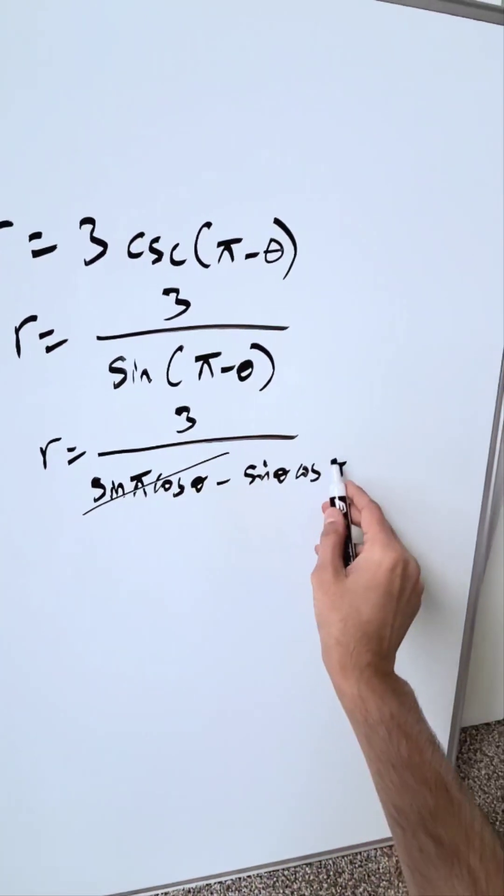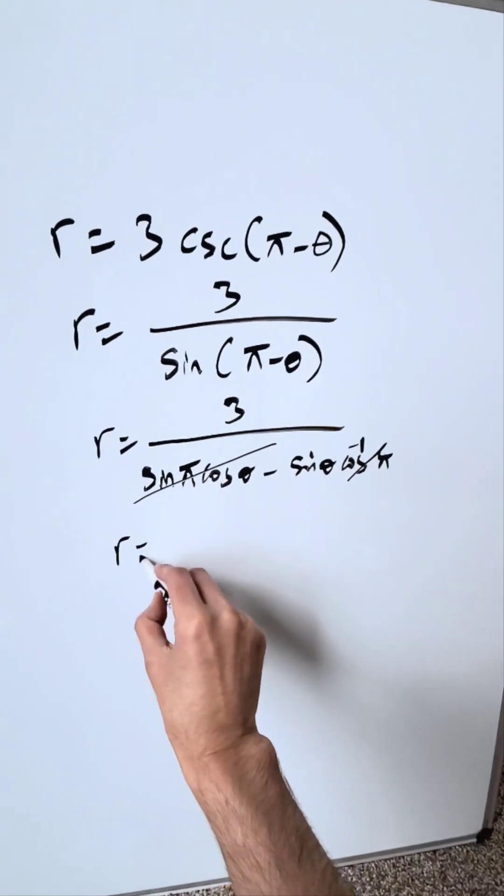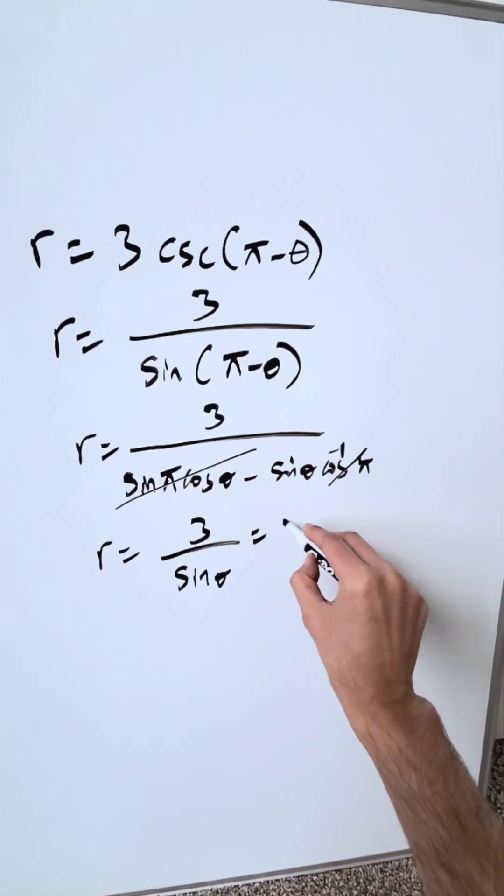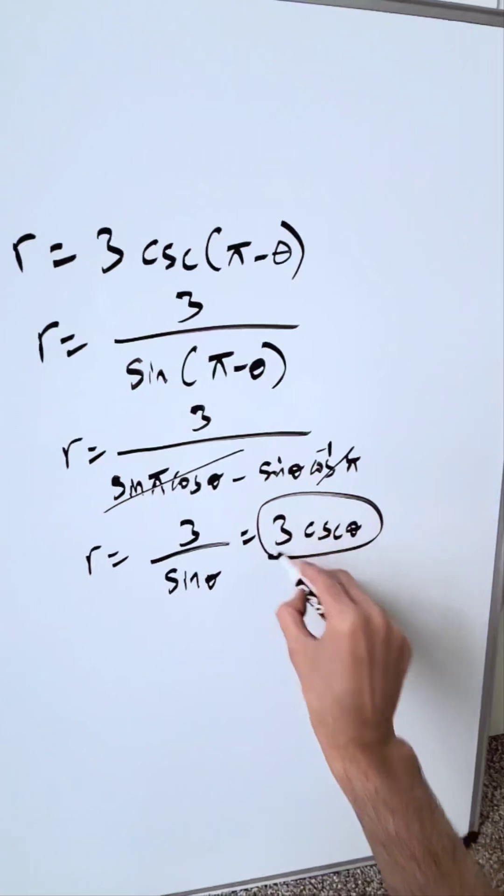zero, this goes away. Cosine pi is minus one; it will convert this into a positive. We have r equals 3 divided by positive sine theta, which you rewrite as 3 cosecant theta. We know r is